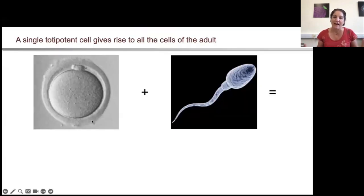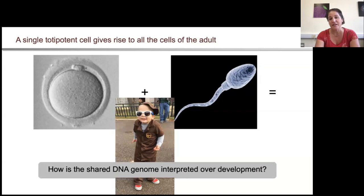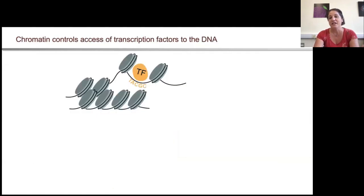What the lab is broadly interested in understanding is how do you take two highly specialized cell types, put them together and get an entirely new organism? In particular, what we're interested in is how is that single DNA genome formed at fertilization differentially interpreted over development to give rise to all the different cell types of the adult organism? This is largely driven by the ability of transcription factors to bind sequence-specifically to the genome and drive gene expression.